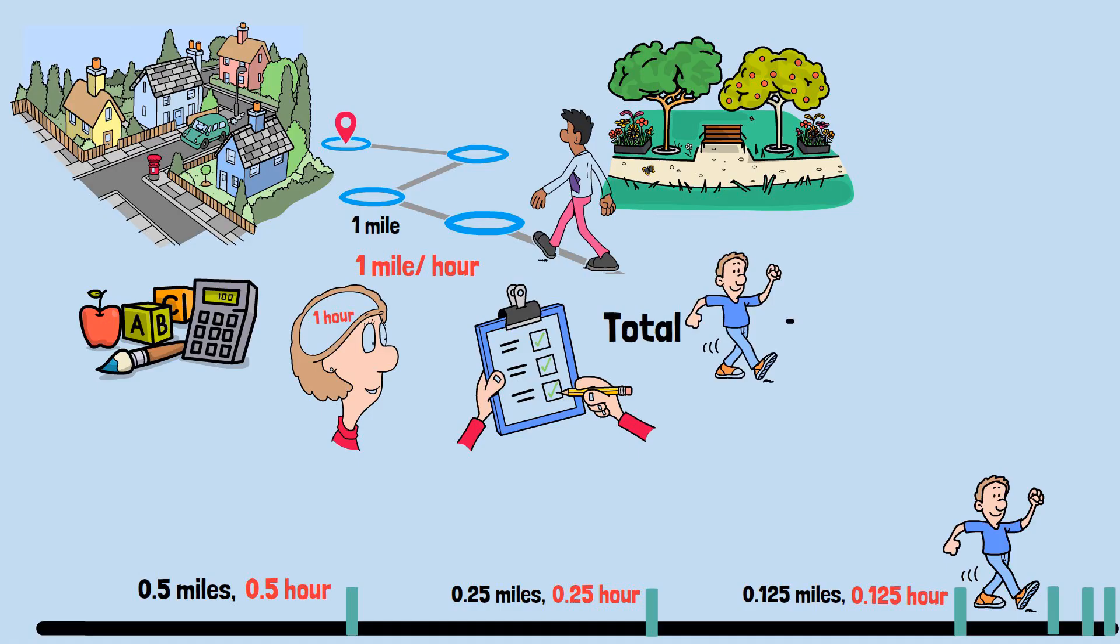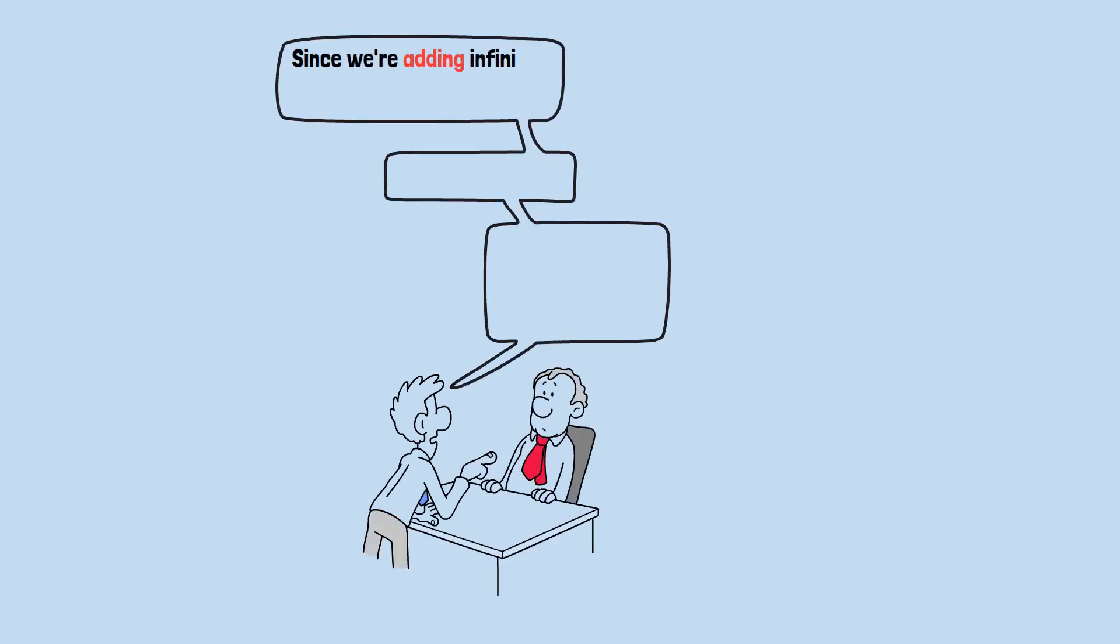The total time for this journey becomes 0.5 plus 0.25 plus 0.125 plus 0.0625 plus 0.03125 and so on. This is an infinite series, an endless string of numbers that we're trying to add together. And here's where Zeno's argument becomes truly insidious. Since we're adding infinitely many positive numbers, he might say, shouldn't the sum be infinite? Shouldn't it take forever to reach the park?